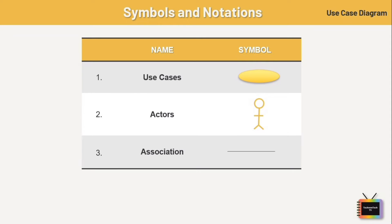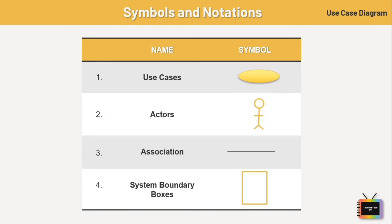Next are associations — a line between actors and use cases. In complex diagrams, it is important to know which actors are associated with which use cases. The last element is system boundary boxes — a rectangular boundary where use cases fall inside it and actors are placed outside it.